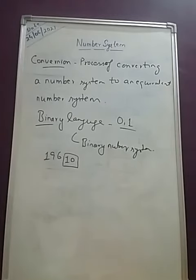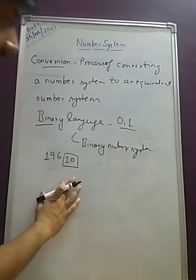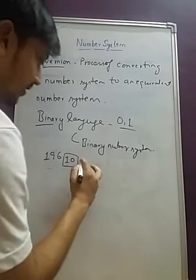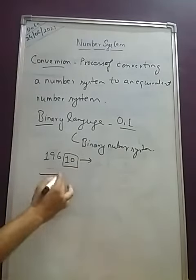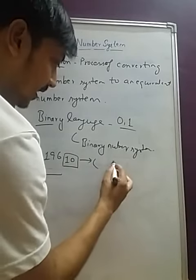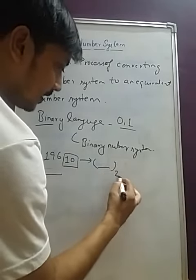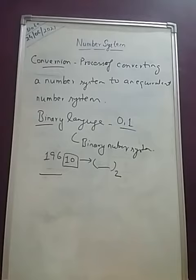What it will be doing is that it doesn't understand the decimal number system. So first it will be converting this number into the equivalent binary number system, and then this code is understood by the computer system.